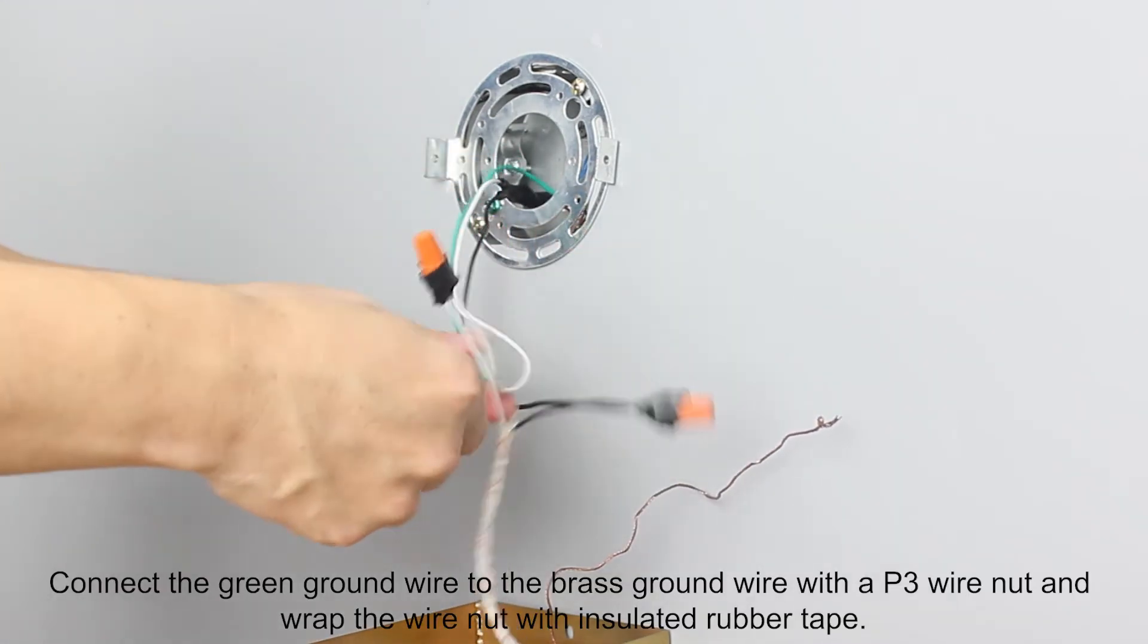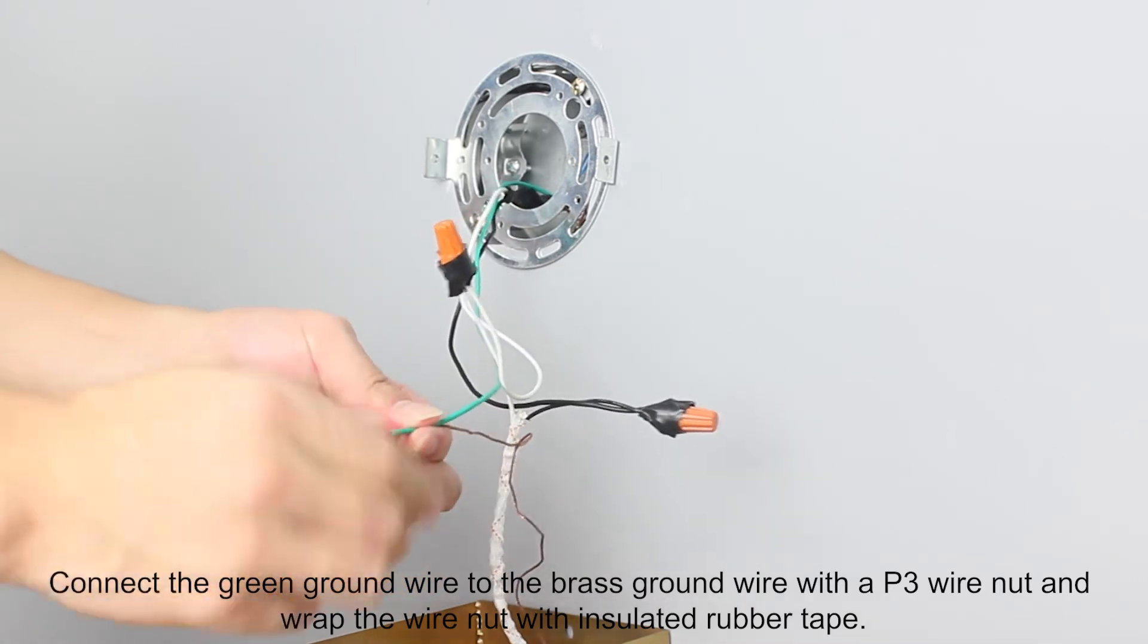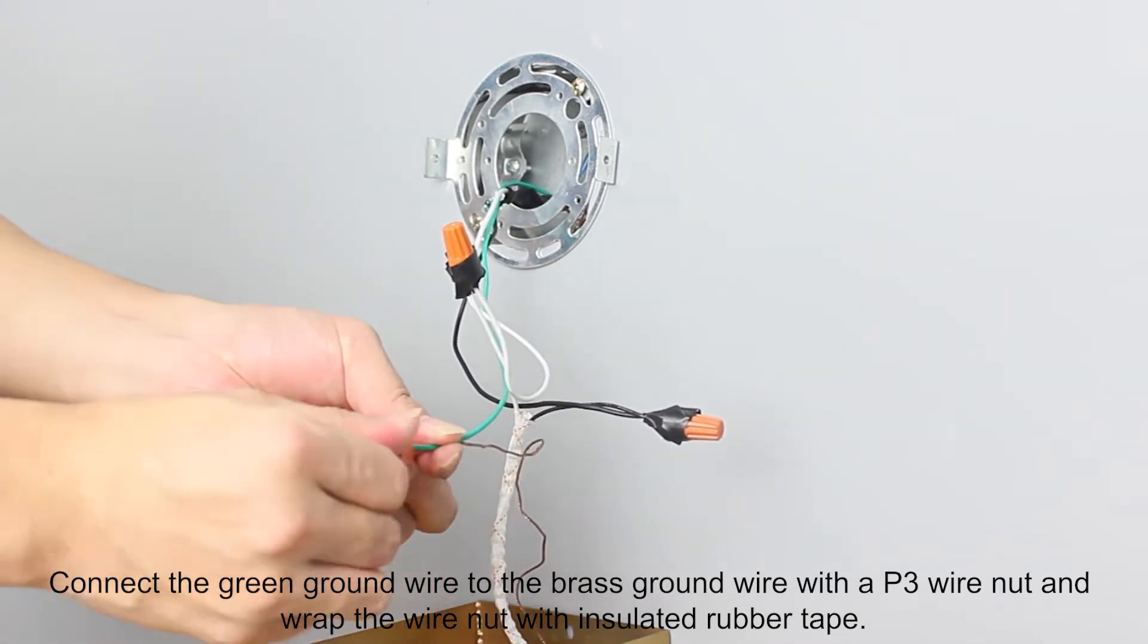Connect the green ground wire to the brass ground wire with a P3 wire nut and wrap the wire nut with insulated rubber tape.